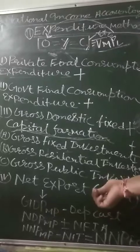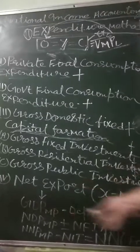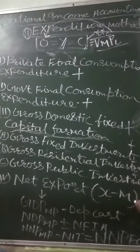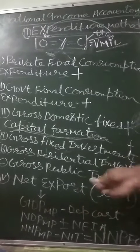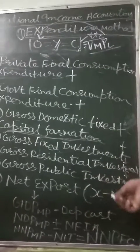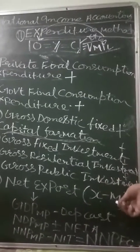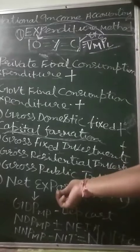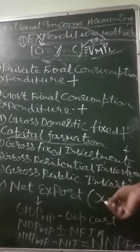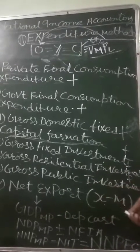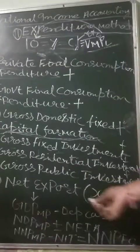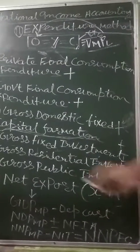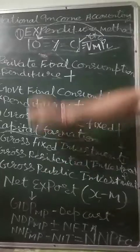The fourth item is net export. Net export equals export minus import. It may be positive or negative — if exports are greater than imports it is positive, and if imports are greater than exports it can be negative.